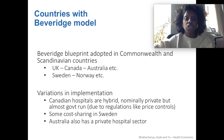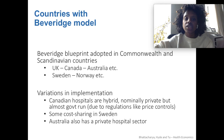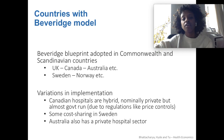There are a lot of countries that have this Beveridge model, especially the UK Commonwealth countries — so former colonies like Canada and Australia — and the Scandinavian countries like Sweden and Norway. There are some variations in the way each country implements this model. In Canada, for example, it's more of a hybrid: the hospitals are technically privately run, but heavily regulated.